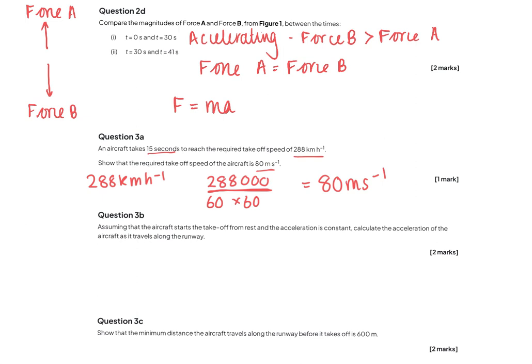Question 3b. Assuming it starts at rest — so initial velocity is zero — and the acceleration is constant, calculate the acceleration of the aircraft. Acceleration equals change in velocity divided by time. The change in velocity is 80 metres per second, and the time taken is 15 seconds, so the acceleration is 5.3 metres per second squared.